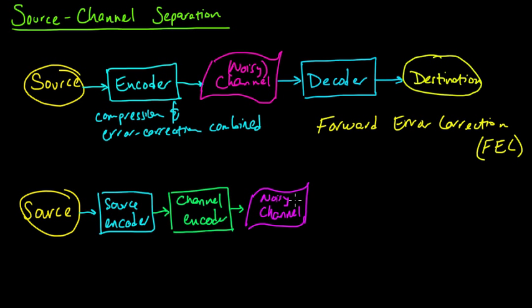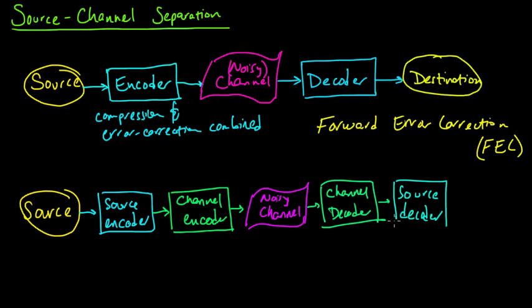The output, of course, goes to the corresponding channel decoder, channel decoder. The output of the channel decoder goes to, of course, the source decoder. So over here, we have the source decoder. And then finally, the output of the source decoder goes to the destination.